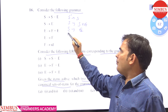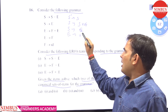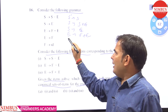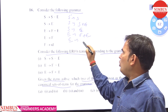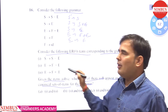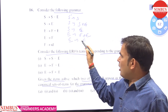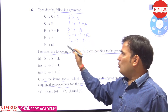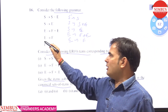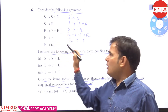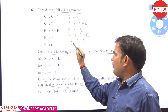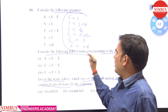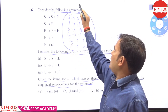Again, dot is encountered in front of E, so we take all productions starting from E: E → .F+E and E → .F. Now dot is encountered in front of F, so we take F → .ID. This completes the I0 state of LR0 items.